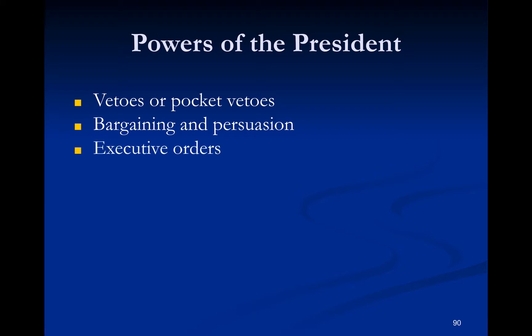The president can issue executive orders, which are direct orders to someone who works in the executive branch. Executive orders are temporary — they either expire at the end of the president's term, or they can be overturned by the courts or by a law passed through Congress.